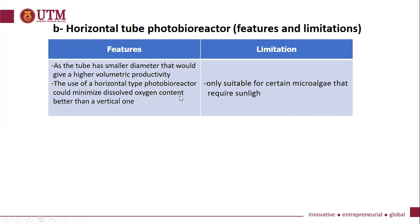The features of the horizontal tube photobioreactor: as the tube has a smaller diameter, it gives a higher volumetric productivity. The use of a horizontal type photobioreactor could minimize dissolved oxygen content better than a vertical one. The limitation is that it is only suitable for certain microalgae that require sunlight.